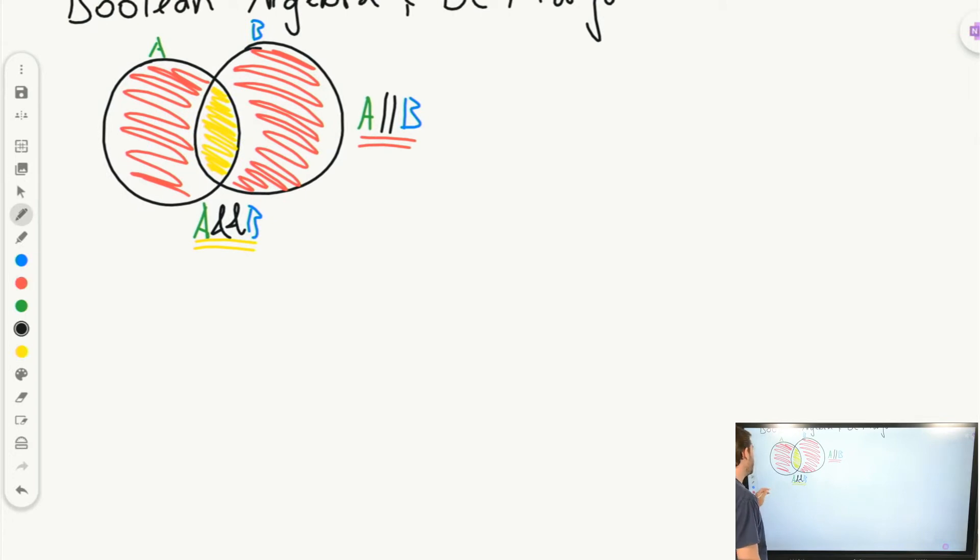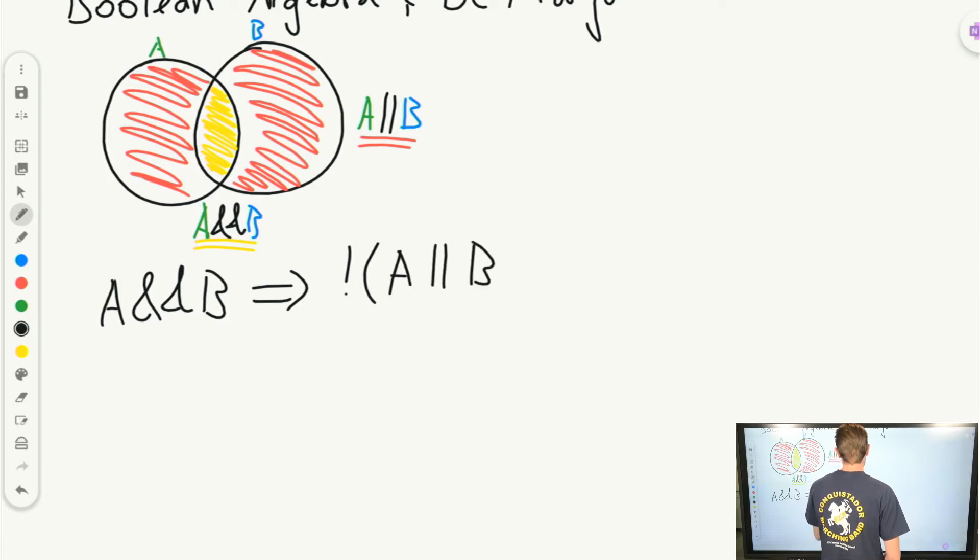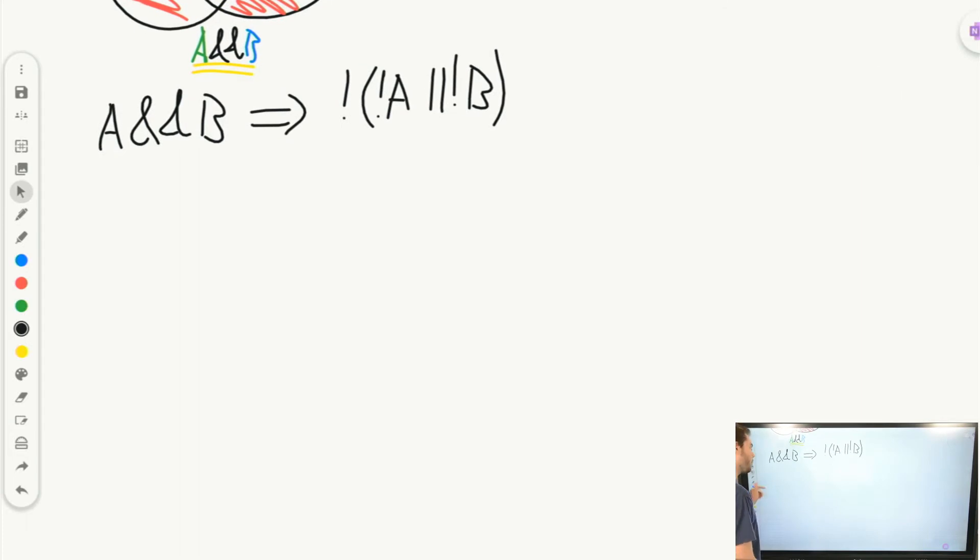So we can say here that A and B is actually equivalent to something kind of interesting here. It's going to be equivalent to not A or not B. How does that make sense? Well, let's actually reverse it. And let's look at this in an algebra sense. So if I do this instead, let's start with this statement.